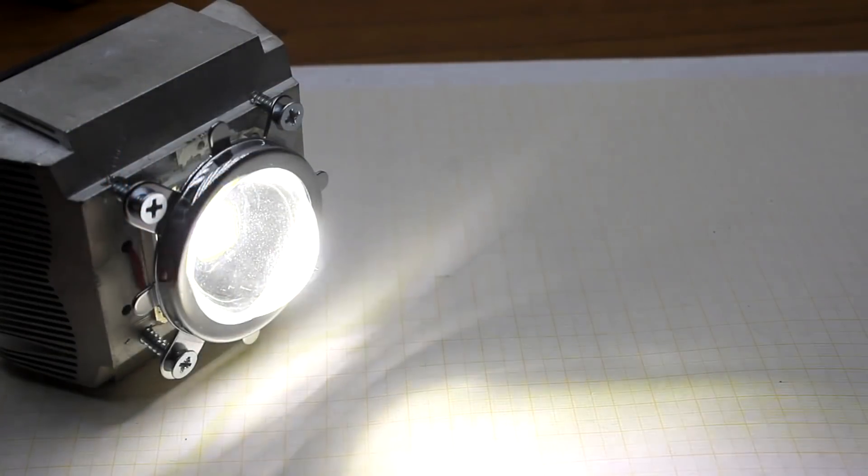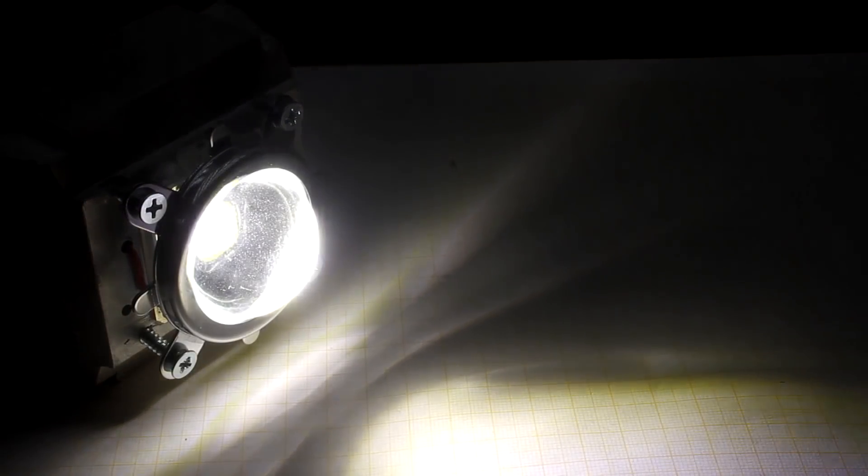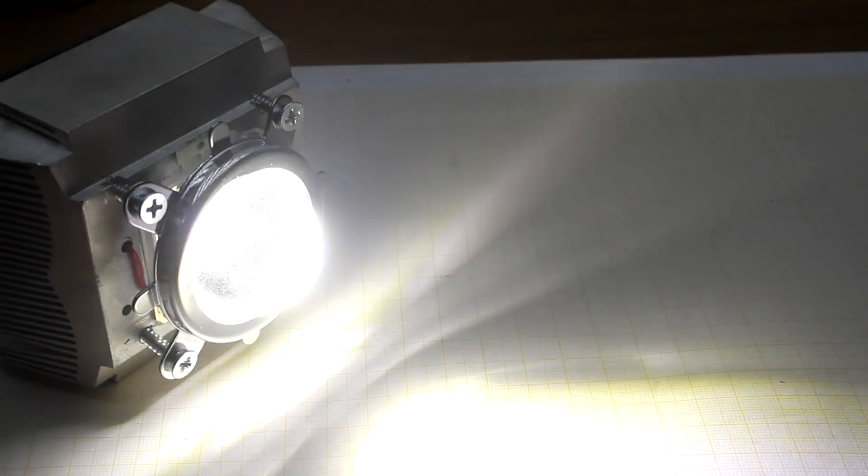Of course, we have the ability to adjust the brightness through the current adjustment, not the voltage. For this purpose, a trimmer is provided on the board.